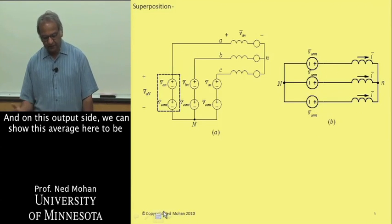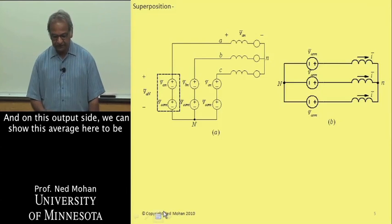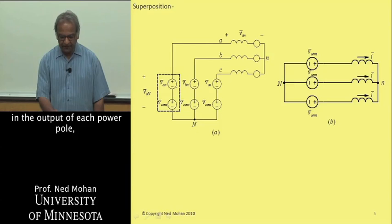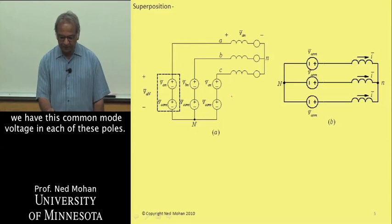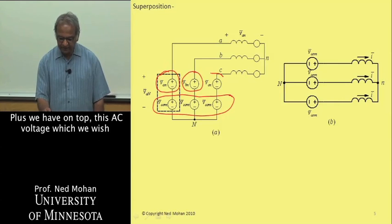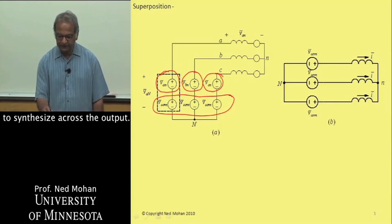At the output side, at the output of each power pole, we have this common mode voltage in each of these poles, plus we have on top this AC voltage which we wish to synthesize across the output.